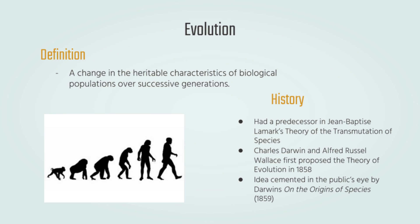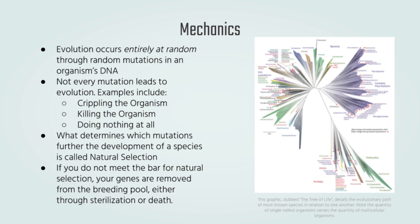Now let's take a look at the mechanics of evolution. There wouldn't be evolution without genetic variation, and genetic variation is caused by mutations. Mutations are random changes in an organism's DNA that give rise to new phenotypes. However, not every mutation leads to evolution — some cripple the organism, some kill the organism, and some do nothing at all.